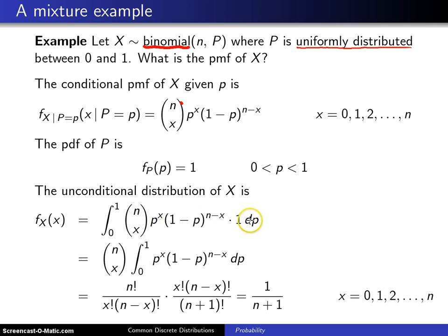And to work that integral, notice that it's with respect to p, so the n choose x can be brought outside of the integral because it does not involve p. And you're left with the integral from 0 to 1 of p to the x times 1 minus p to the n minus x dp.